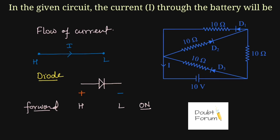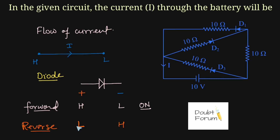The other way of biasing a diode is in the reverse direction. It means the positive of the diode is at lower potential compared to its negative. So the positive is at lower potential and the negative is at higher potential. This way of biasing is called reverse biasing, and always remember that when the diode is in reverse biasing, it will behave like an open circuit, or we can say it acts like an off switch.